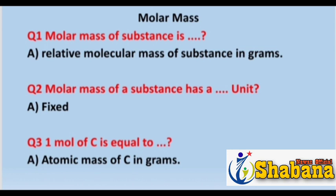The molar mass of a substance has a fixed unit. One mole of carbon is equal to 12 grams. The molar mass of carbon in grams is equal to the atomic mass of carbon in grams. So the molar mass of carbon is 12 grams, which equals 1 mole of carbon.